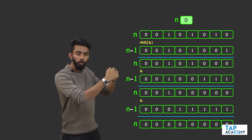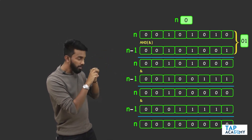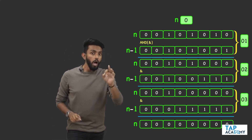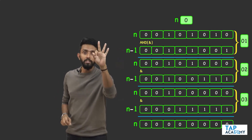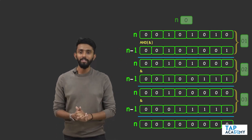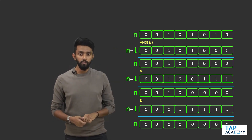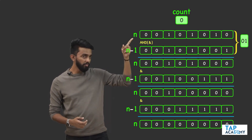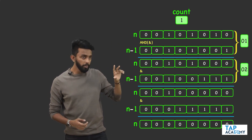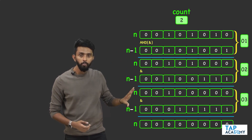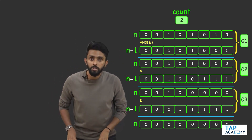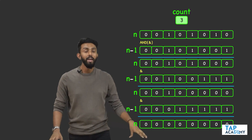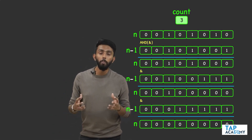The number of times I perform this operation — that is the first time, the second time, the third time. How many times did I do it? Three times. How many set bits were there in the original value of n? Three. So if I maintain a value called count, initialize it to zero, and every time I perform this operation I increment it — first time it becomes one, second time two, third time three. So three times — that is your answer. This is all your simple optimized logic is.